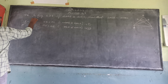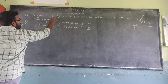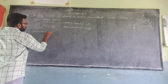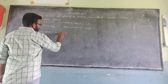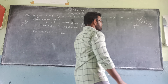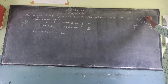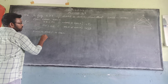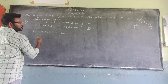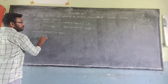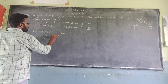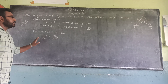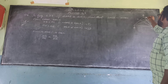From triangles ADE and triangle ABC, we consider these two triangles. AB by AE is equal to AB by AC. Here AB by AC is the same, that means you will get 1. Now, angle DAE is equal to angle CAB.